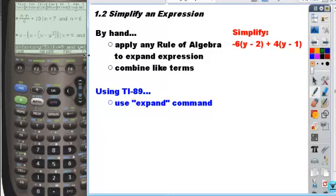So in this case, we distribute the negative 6 to each term, giving you a negative 6y and a plus 12. Distribute your 4 to each of the terms in the grouping symbol, gives you 4y and a minus 4. And then move to the next step, which is just to combine your like terms.